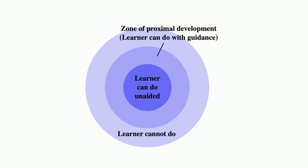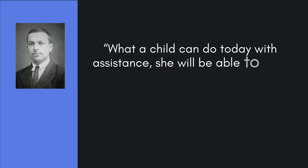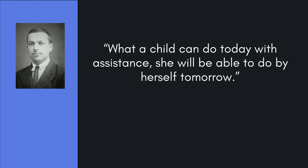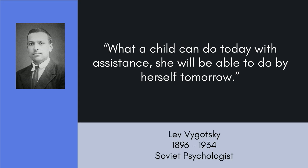Vygotsky argued that at any point in time, a child can reach a certain developmental level independently. But there is a zone beyond this level that the child has the potential to reach. The key factor for a child to reach into this zone and so reach her full potential is interaction with a more knowledgeable person. This person can be an adult or another child. In most English classes, it is usually the teacher.